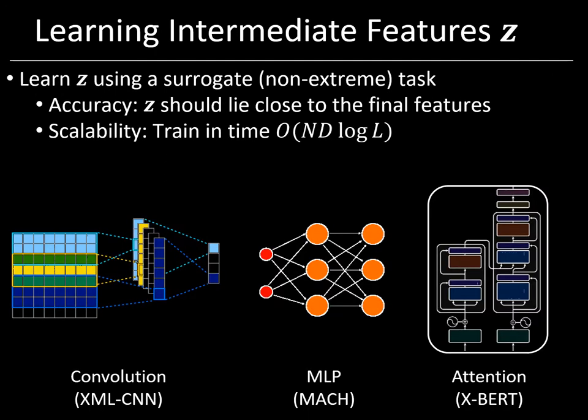Let us now look in more detail at the four modules and their various components. The objective in the first module is to select a feature architecture suitable for the given application and use it to train intermediate features Z by optimizing a non-extreme surrogate loss function. These intermediate features Z should have two properties: first, they should be accurate in the sense that had we optimized the feature architecture directly on the extreme task, the resulting features should not lie too far from the intermediate features; and second, in order to ensure scalability, the intermediate features should be learnt in time order n·d·log·l on a dataset with n training points, l labels, and d-dimensional features.